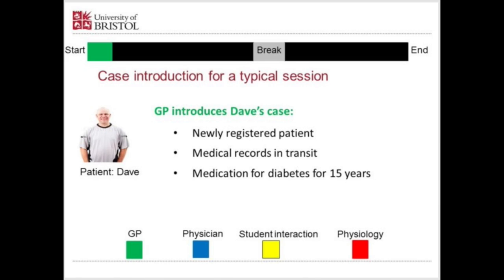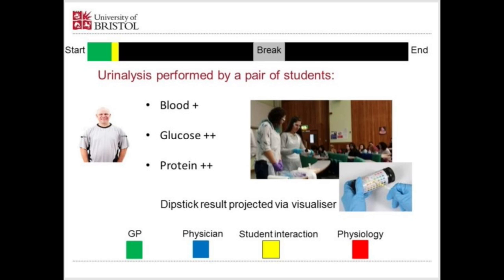The session then performs some urinalysis with a pair of students. We make this theatrical — students come to the front wearing plastic aprons, safety specs and gloves, and test a prepared urine sample. That sample contains blood, glucose and protein, and the dipstick results are projected via a visualiser on the large screen so all students can see the outcome.